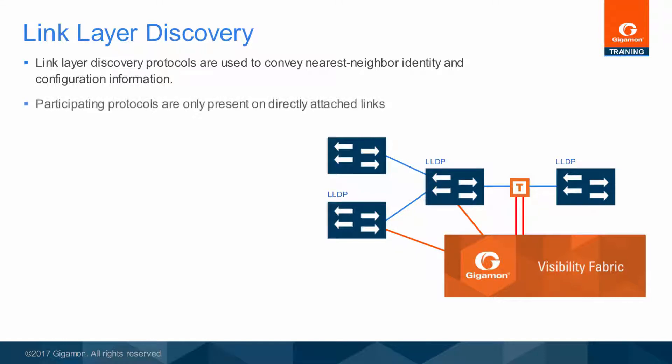When both interconnected switches are configured for the same protocol, the packet is removed from the link by the receiving switch and discarded — it is interpreted but not forwarded. The best discovery protocol information will come from a tap, because each side of the tap will forward from one of the switches, so the origin of the traffic will be correctly identified.